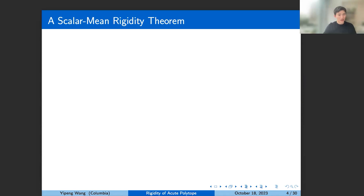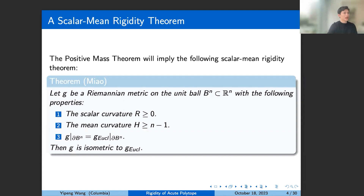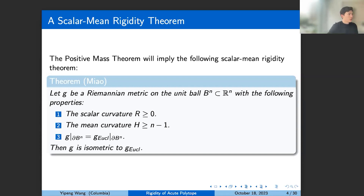Now let me move to manifolds with boundary. As we saw in the last talk on rigidity of bands, not only do we need the scalar curvature to be non-negative in the interior, but we also need to assume certain conditions on the boundary mean curvature. A typical example is the following theorem first observed by Miao, which follows from the positive mass theorem: if you have a Riemannian metric on a unit ball in Euclidean space such that the scalar curvature is non-negative and the mean curvature is at least n−1—the mean curvature of the standard sphere—and moreover the metric restricted to the boundary agrees with the Euclidean metric, then g is isometric to the Euclidean metric.